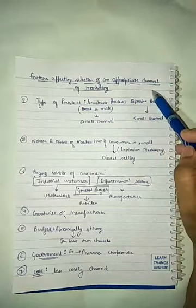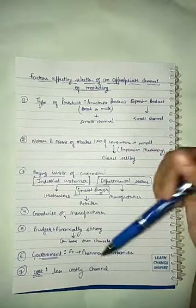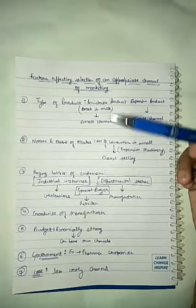Next is the government influence on the selection of an appropriate channel of marketing. For example, in pharma companies, agents must be licensed.